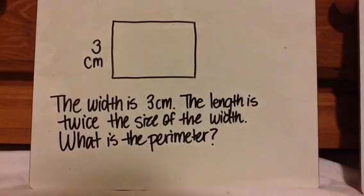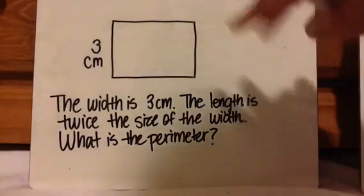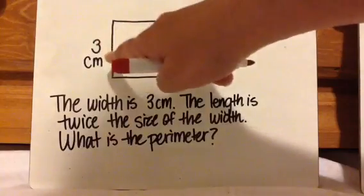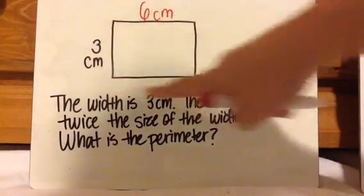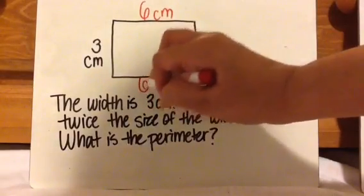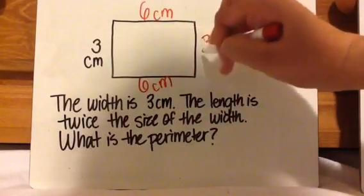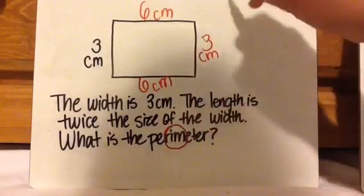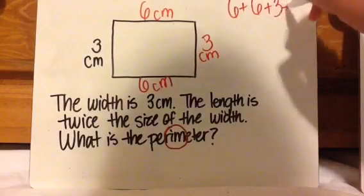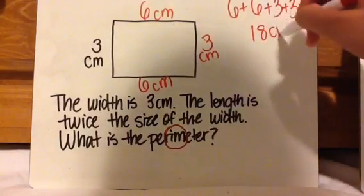So let's look at this question for example. It has a picture and it says the width is 3 centimeters. The length is twice the size of the width. What is the perimeter? So this is kind of like a two-step problem. First I've got to figure out the size of the length. So when it says twice the size, that means times 2. It's like doubling. So if this is 3, then this is going to be 6. And remember, if you're finding perimeter, you've got to find everything. You've got to label everything. So 6 and 6, 3 and 3. And then they want perimeter and I'm going to circle that word perimeter so I know I've got to find all the way around. So 6 plus 6 plus 3 plus 3 equals 18 centimeters.